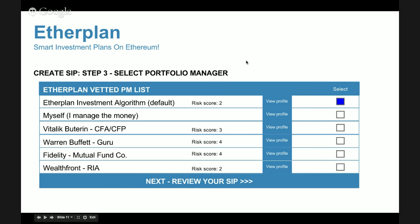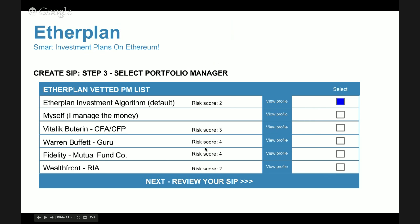The next step is to select a portfolio manager — a key value-add of EtherPlan. Options include the EtherPlan default algorithm, self-management, or a list of vetted professional managers — humans, algorithms, or private companies — each with a risk score. For example: a score of two is moderate to conservative, three is moderate for Warren Buffett and Fidelity since they invest in equities, and Wealthfront offers a moderate-to-conservative service.